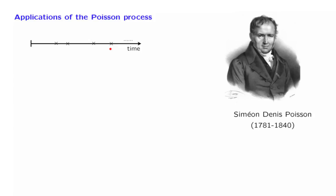An early example where the data seems to fit the description of the Poisson process is a curious one. It had to do with deaths from horse kicks — that is, accidental deaths — in the Prussian army.